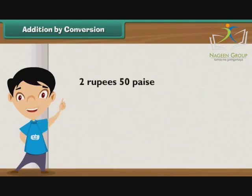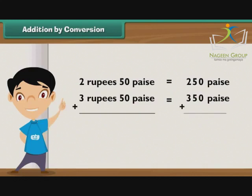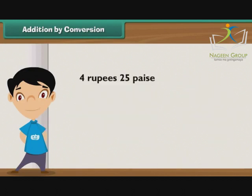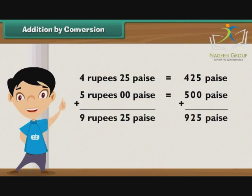Let us add 2 rupees 50 paise and 3 rupees 50 paise. 2 rupees 50 paise is equal to 250 paise. 3 rupees 50 paise is equal to 350 paise. So we add 250 and 350 paise, which is equal to 600 paise. 4 rupees 25 paise is equal to 425 paise, and 5 rupees is equal to 500 paise. So we add 425 and 500, which is equal to 925 paise.